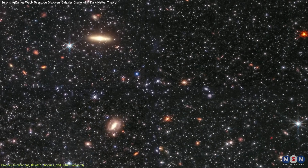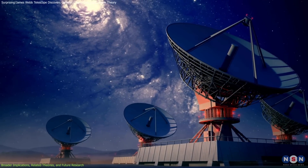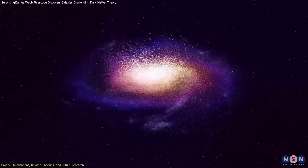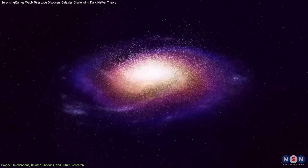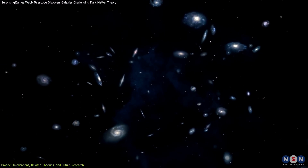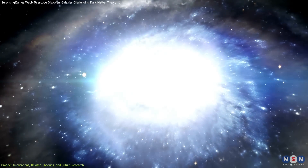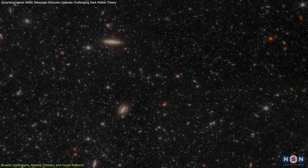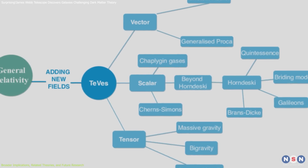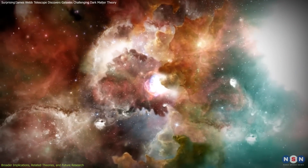These discoveries also point to the need for more research and observations. Telescopes and observatories like the Rubin Observatory are set to come online soon and will help us gather more data on galaxy formation and behavior across the universe. Additionally, Webb will continue to observe distant galaxies, providing further insights into whether these rapid growth structures are more common than previously thought. By studying these galaxies, scientists will be able to test MOND, TeVeS, and the dark matter model more rigorously, helping us refine our understanding of the universe.